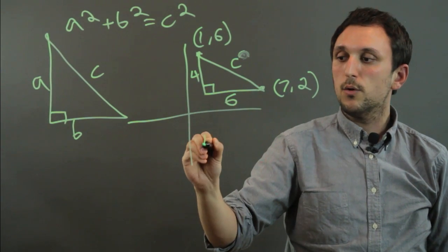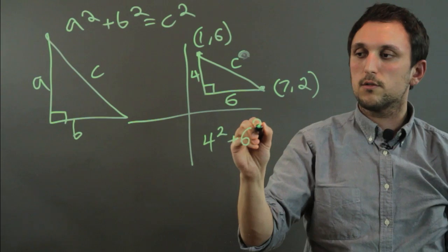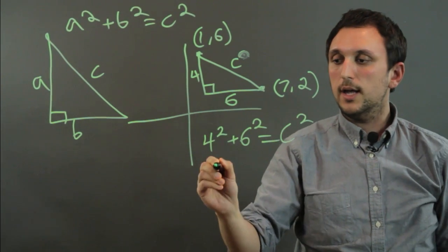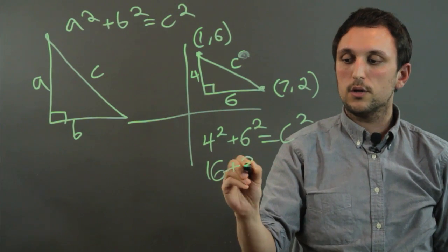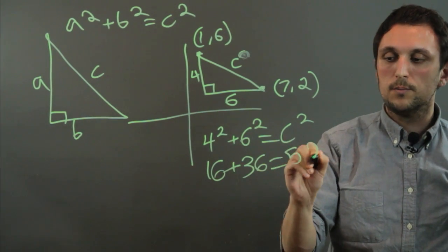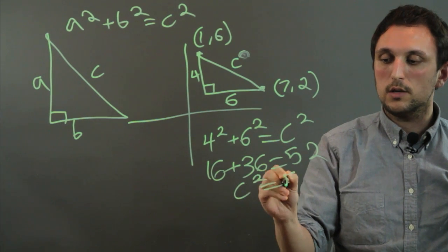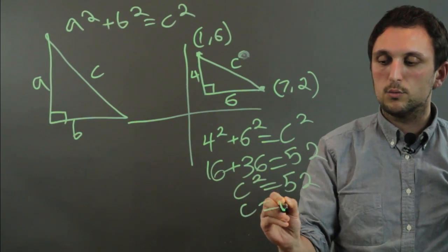So 4 squared plus 6 squared equals C squared and 16 plus 36 equals 52. So C squared equals 52 and C equals root 52.